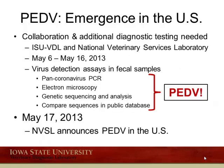Additional collaborative efforts between the ISU VDL and the National Veterinary Services Laboratory between May 6th and May 16th involved a number of different virus detection assays, including electron microscopy, pan-coronavirus PCR testing, genetic sequencing analysis, and comparison to sequences in the public database GenBank. Through those efforts, we were able to confirm that the virus was PED, prompting NVSL to announce on May 17th of 2013 that PED was in the U.S.